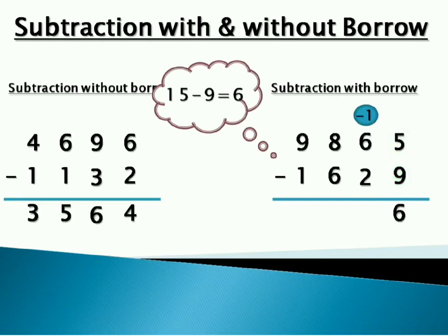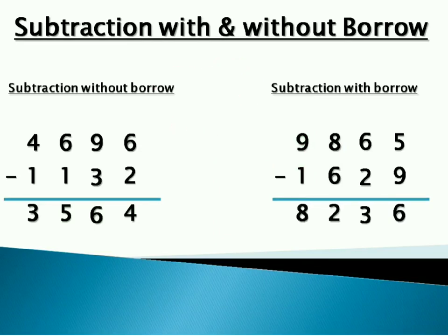Next, 6 minus 1 minus 2 is 3. Minus 1 is borrowed one. Next is 8 minus 6. That is 2. 9 minus 1 is 8. So the answer is 8236. So here we are done with subtraction. Let's start with multiplication.